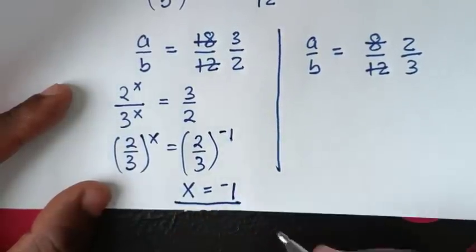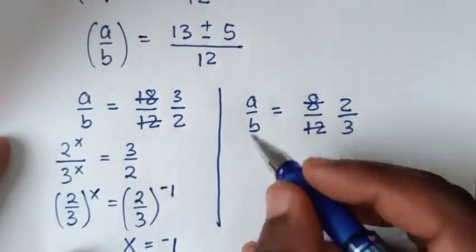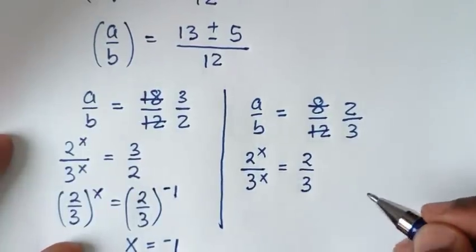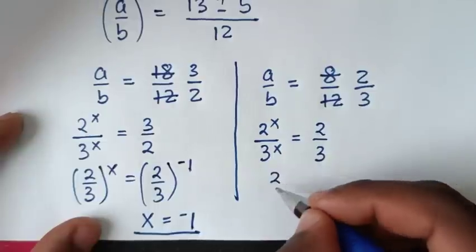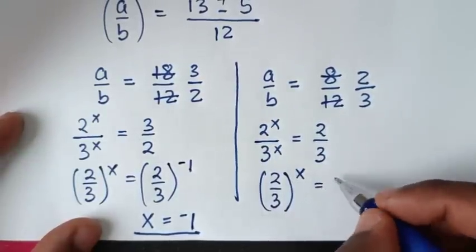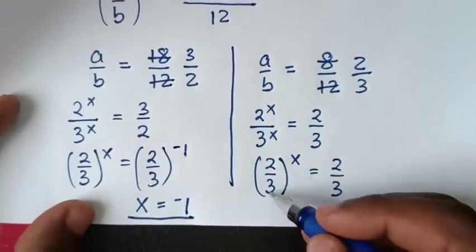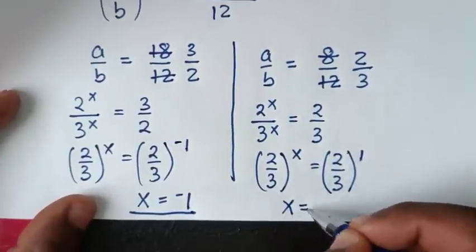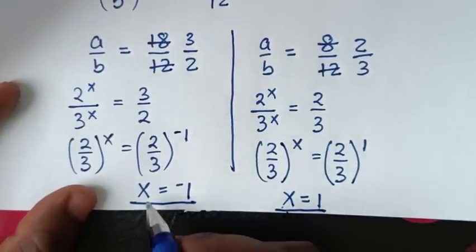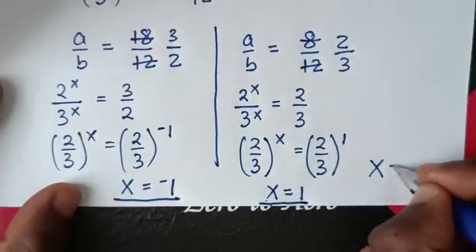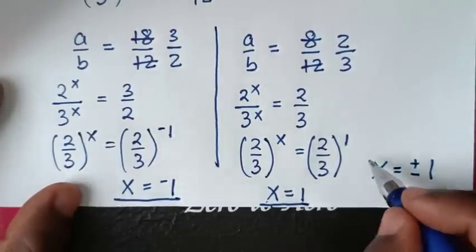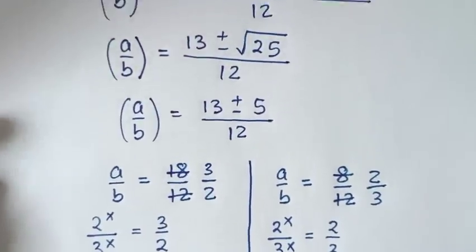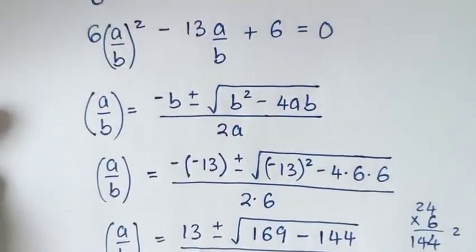From both solutions, x = -1 and x = 1. Therefore, our final answer is x = ±1. Thank you for watching. Don't forget to subscribe to my channel and see you in the next video.